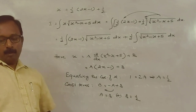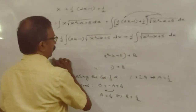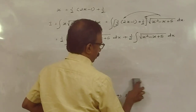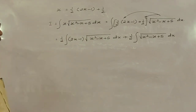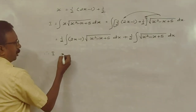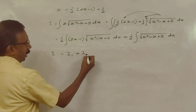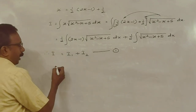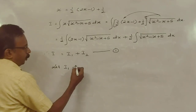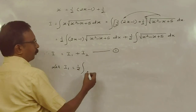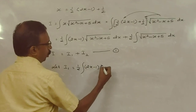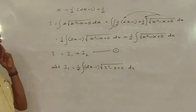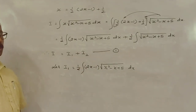Therefore I is equal to I1 plus I2, equation number 1. Now let me find I1. I1 is equal to (1/2) into integral of (2x - 1) into root of (x² - x + 5) dx. This is in substitution form.